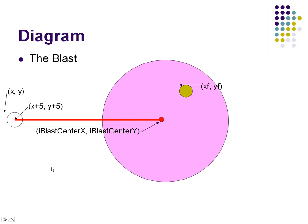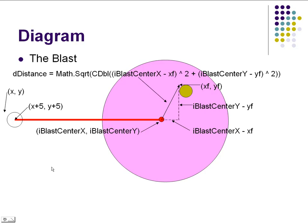Distance formula — Pythagorean's Theorem — same difference. That ship has coordinates XF and YF for filled-in ship, located at the upper left-hand corner. We want to find this distance. The distance up is simply the difference of the two Y-coordinates: the Y-coordinate of the blast minus the Y-coordinate of the ship. The distance across is simply the difference of the two X-coordinates: the X-coordinate of the blast minus the X-coordinate of the ship. It makes no difference which order you put these in because in the distance formula you're going to square that difference, which takes the sign off.